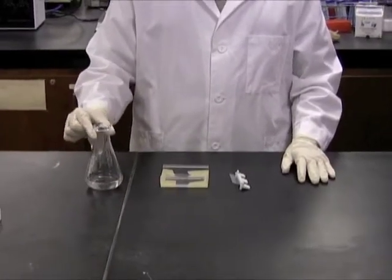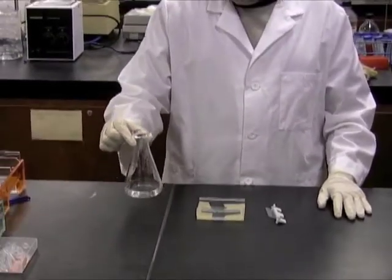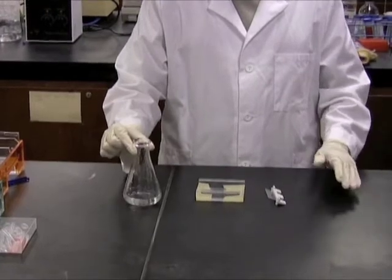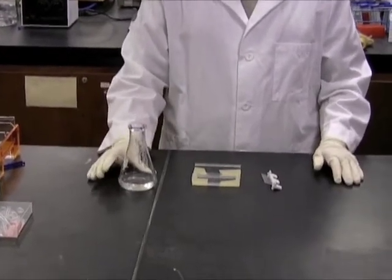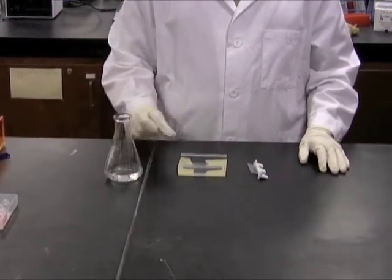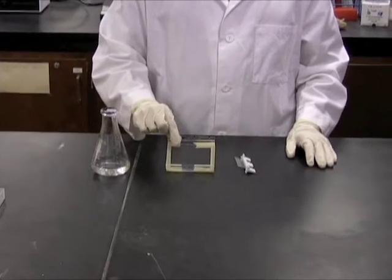Before you pour the agarose gel into the casting tray, you need to make sure that the agarose is not too hot. If the agarose is too hot, it might melt the tape on either end of the casting tray or could even warp your casting tray.